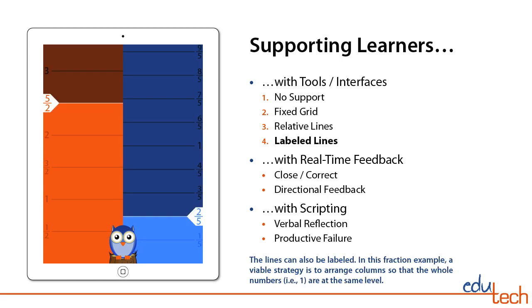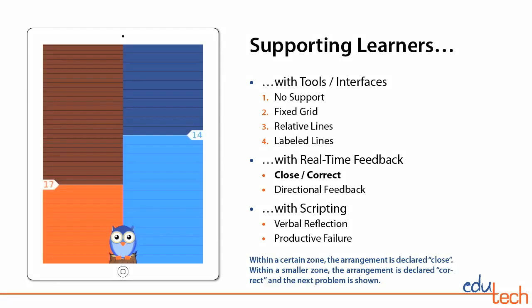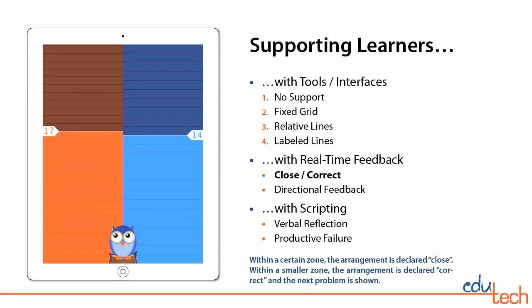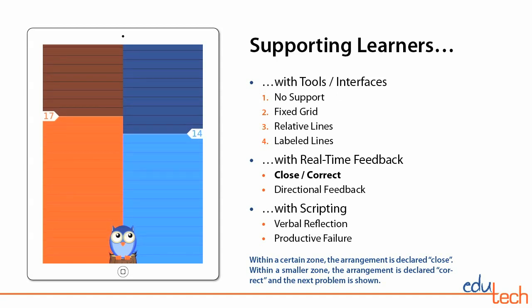The relative lines can also be labeled. In this fraction example, a viable strategy is to arrange the columns so that the whole numbers, i.e. 1, are at the same level. The app provides real-time feedback on task progress. Within a certain zone, the arrangement is declared close, and within a smaller zone, the arrangement is declared correct and the next problem is shown.